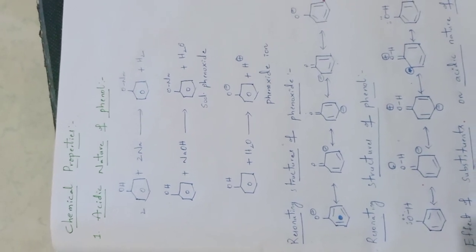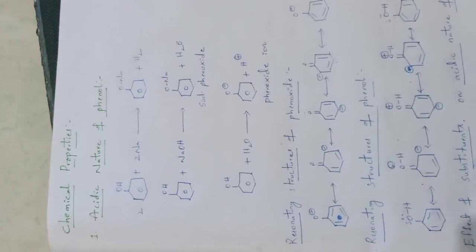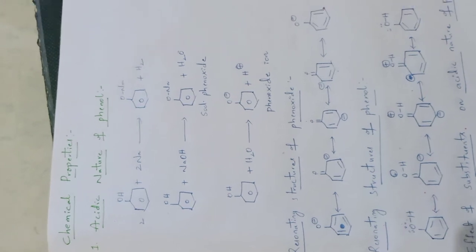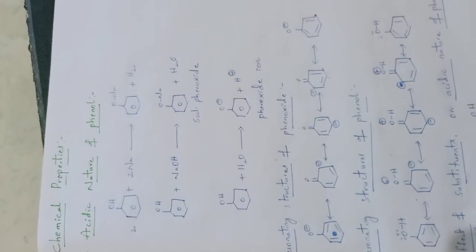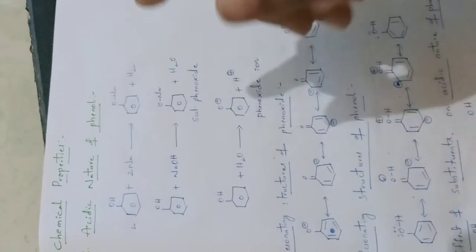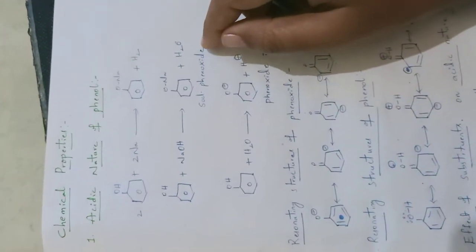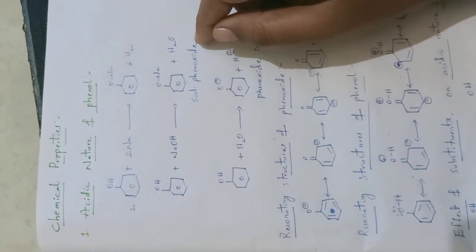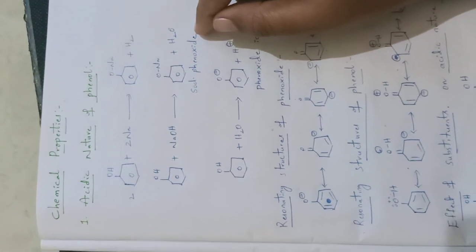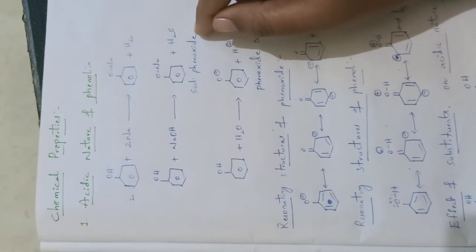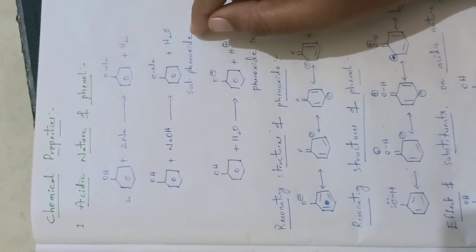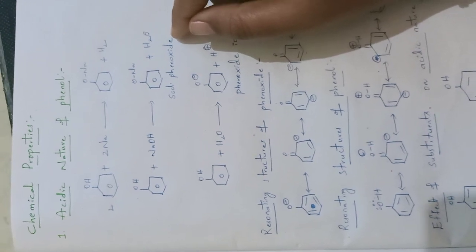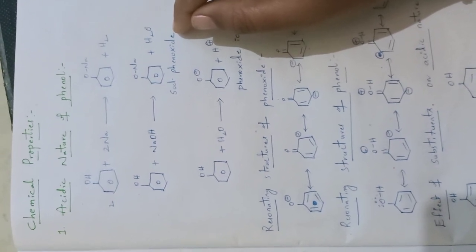The most important one is the acidic nature of phenol. That means phenol can show acidic property — it has the property to lose a proton. If any compound has the property to lose a proton, that is known as acidic nature.